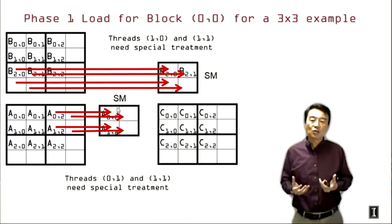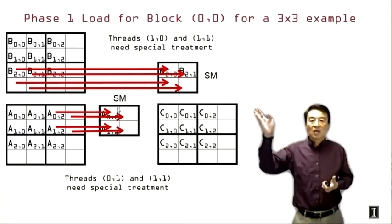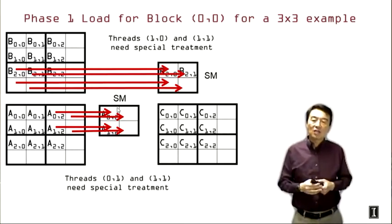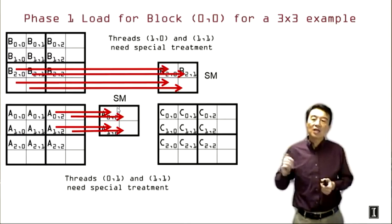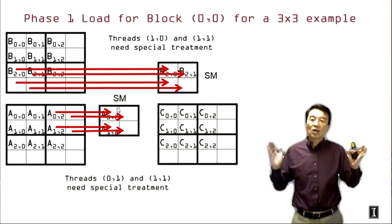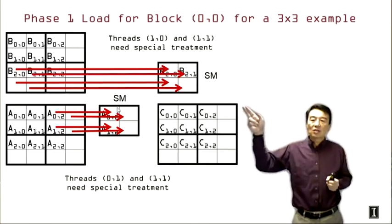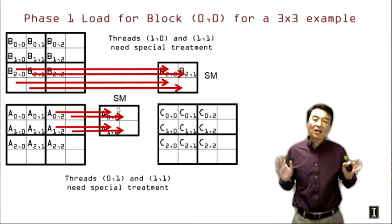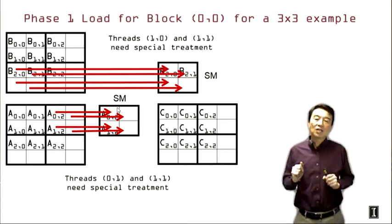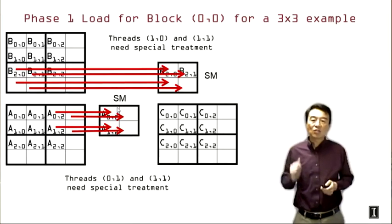And the situation for B is a little bit different because thread 1,0 and thread 1,1 will try to load B3,0 and B3,1, which do not exist. And even worse than the A case, these locations are outside the allocated range of the B matrix. So the chances are they will likely trigger some kind of memory protection error for accessing a B element that is outside any of the valid B allocation range. So this can actually cause a termination of the kernel in some of the GPUs.